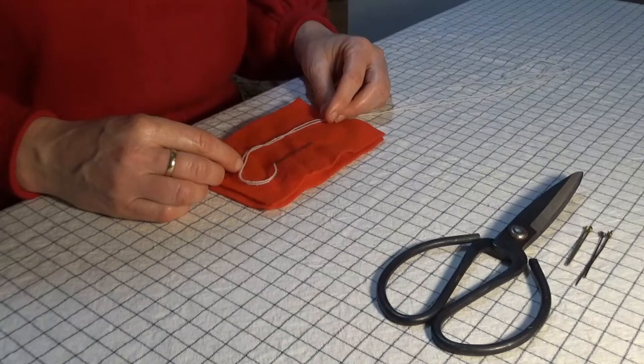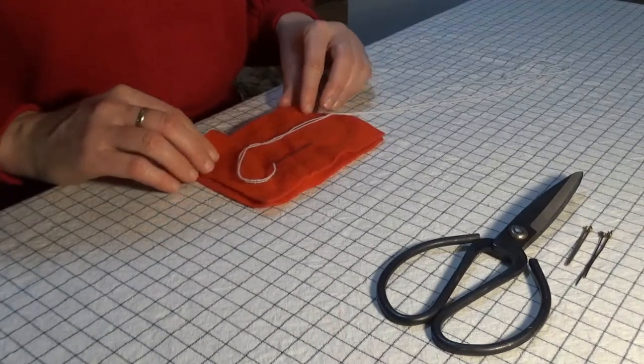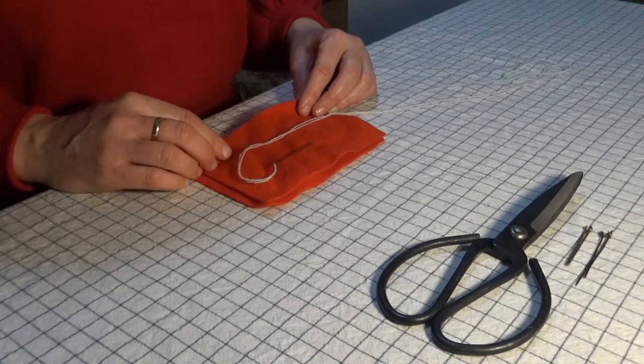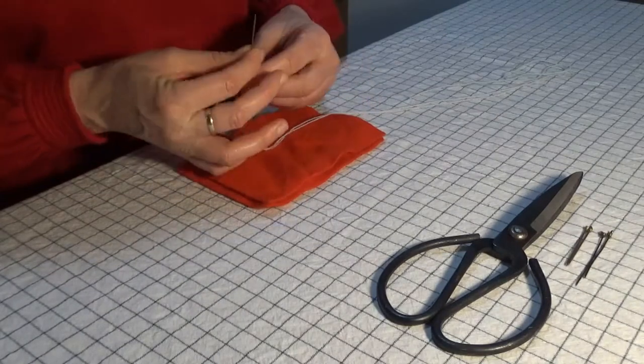Last time we focused in detail on making a simple running stitch on some late medieval broadcloth using a wool yarn and a linen thread. We also learned some ways to easily thread the needle and to knot off securely. Today we'll be looking at backstitch.